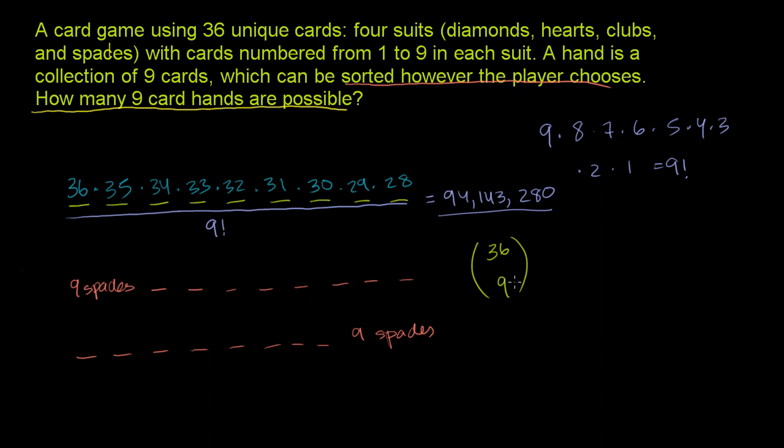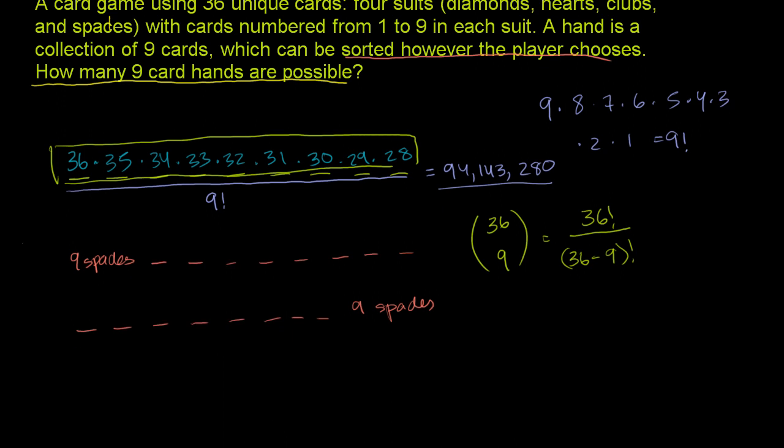What did we do here? We have 36 things, we chose 9. So this numerator over here, this was 36 factorial. But 36 factorial would go all the way down to 27, 26, 25 - it would just keep going. But we stopped only 9 away from 36. So this part right there is not just 36 factorial - it's 36 factorial divided by (36-9) factorial. What is 36-9? It's 27. So 27 factorial.